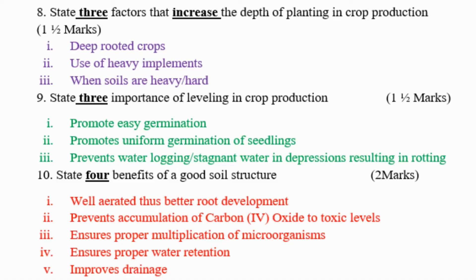Question number 10: State four benefits of a good soil structure. Number 1: well-aerated — thus better root development. Number 2: prevents accumulation of carbon dioxide to toxic levels. Number 3: ensures proper multiplication of microorganisms. Next: ensures proper water retention. And lastly: improves drainage. Those are the four benefits of a good soil structure.